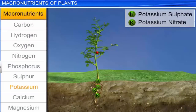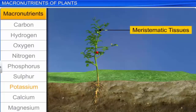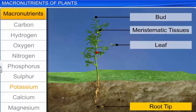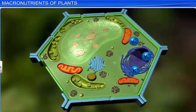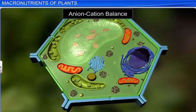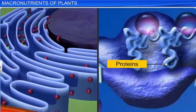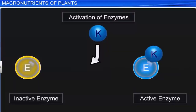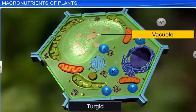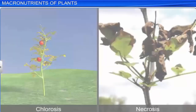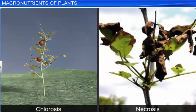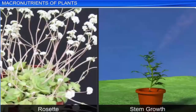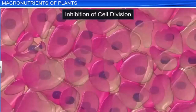Potassium sulfate and potassium nitrate supply the plant with potassium. It is required by meristematic tissues, buds, leaves, and root tips. It helps to maintain the anion-cation balance in cells. It is involved in protein synthesis, opening and closing of the stomata, activation of enzymes, and maintenance of turgidity of cells. The deficiency of potassium leads to chlorosis, necrosis, rosette or bushy habit of growth, reduction in stem growth, and inhibition of cell division.